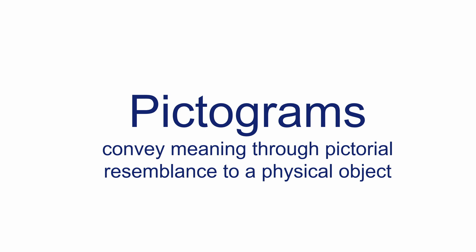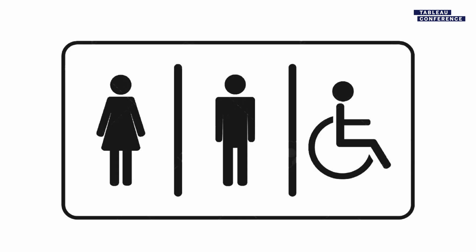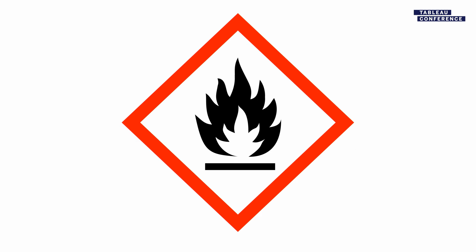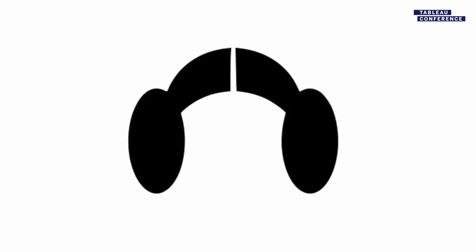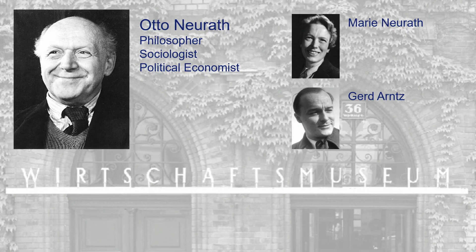Let me show you a couple of examples. What is this pictogram — what does it represent? Information. Bathrooms. Restrooms. Fire. Princess Leia. Pictograms are terrific. We use them all the time in visual communication.